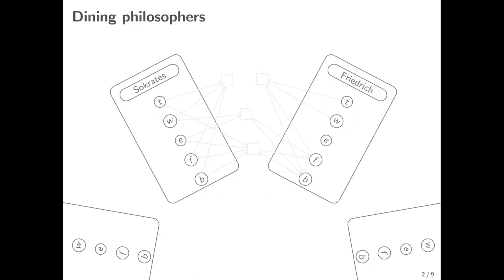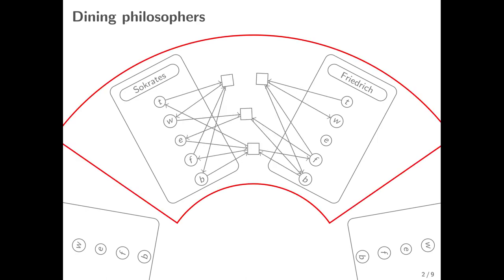Let me introduce the parameterized systems we will be using as a running example: the Dining Philosophers. The Dining Philosophers is a parameterized system that models a group of philosophers sitting at a round table where every philosopher owns a fork lying in front of them. The philosophers all run the same simple protocol — they might move from thinking to waiting while taking the fork in front of them. This is modeled by a transition in the Petrinet, moving from thinking to waiting and moving the fork from free to busy.